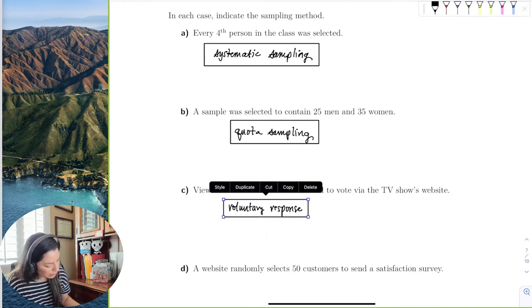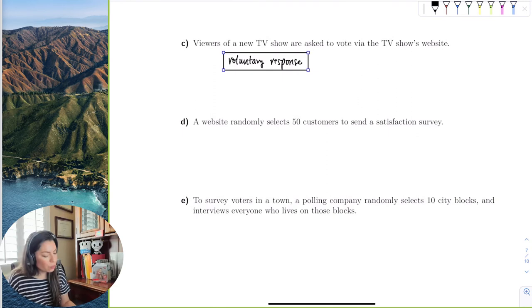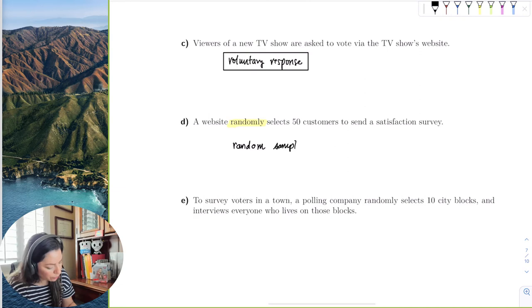In example D, a website randomly selects 50 customers to send a satisfaction survey. So they randomly selected, random sampling. Which is perfect, right? That's the ideal.